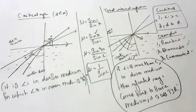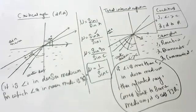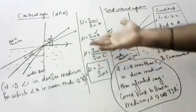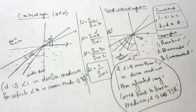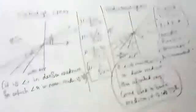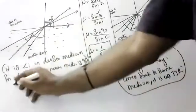Sometimes numerical problems may be asked. For example: find the critical angle for diamond whose refractive index is 2.4. This is a simple numerical.